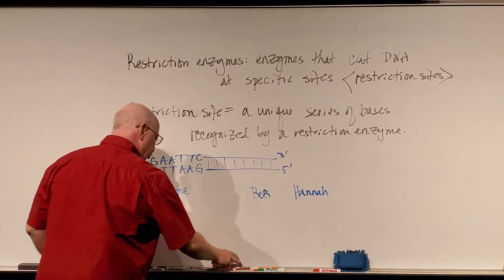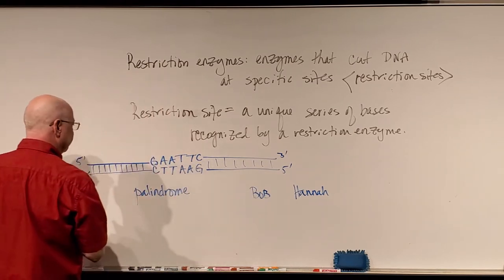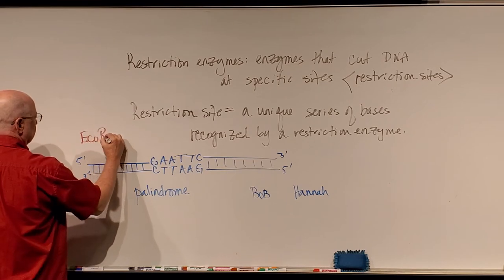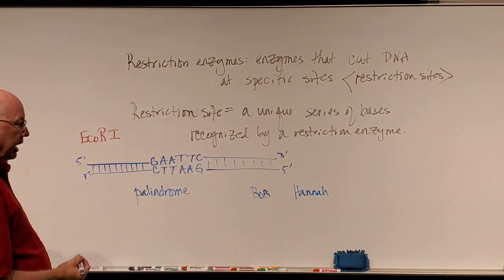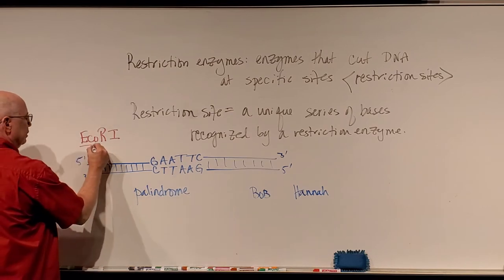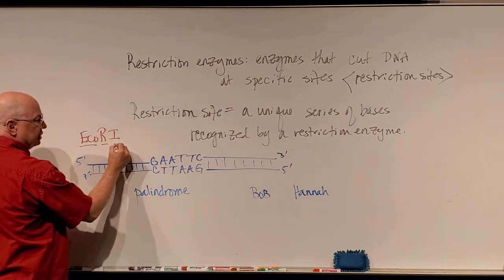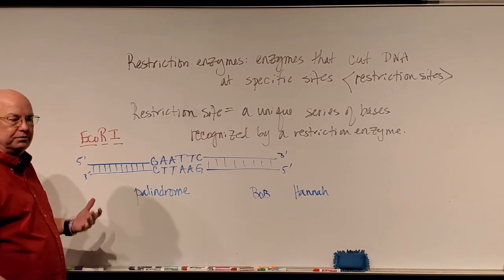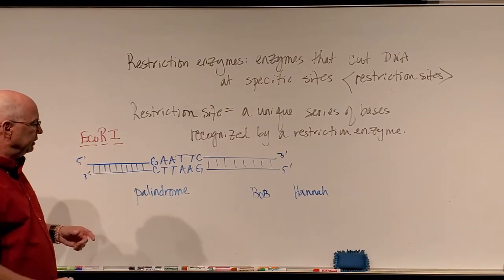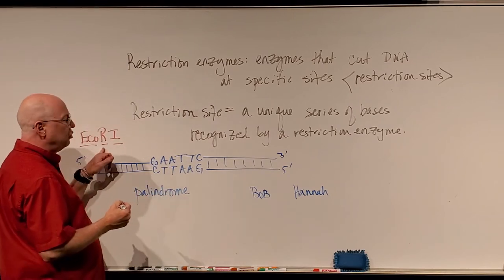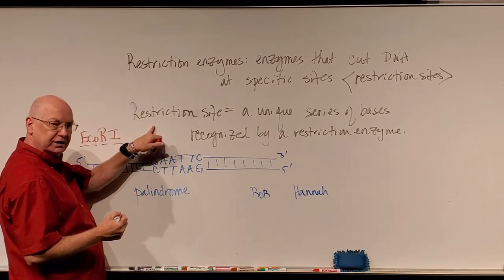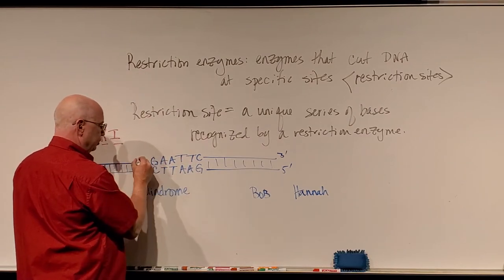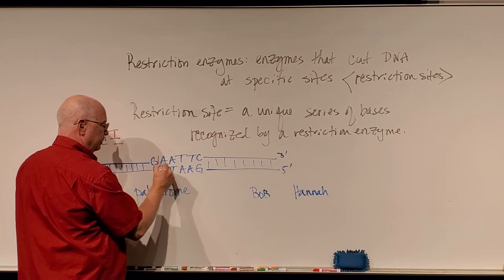There's a restriction enzyme associated with what's called the EcoRI site — Roman numeral one. EcoRI comes from E. coli restriction site one. There are several restriction sites in the E. coli genome, but this particular one reads the GAATTC palindrome sequence. The EcoRI restriction enzyme recognizes this restriction site as it moves along the DNA and cuts there.